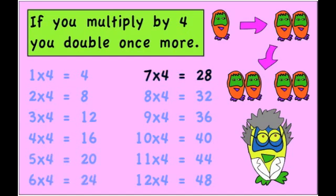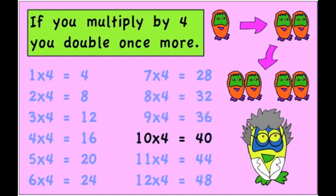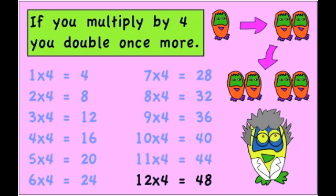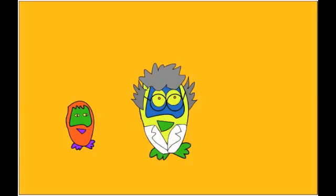Six times four is twenty-four. Seven times four is twenty-eight. Eight times four is thirty-two. Nine times four is thirty-six. Ten times four is forty. Eleven times four is forty-four. Twelve times four is forty-eight.